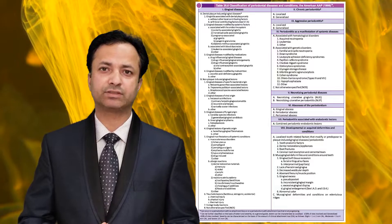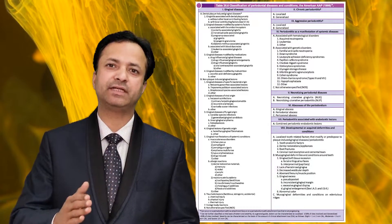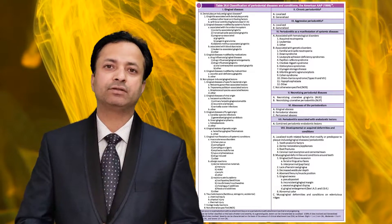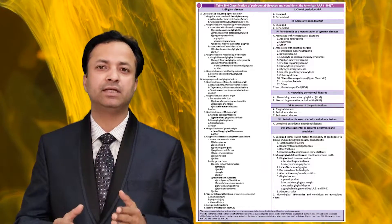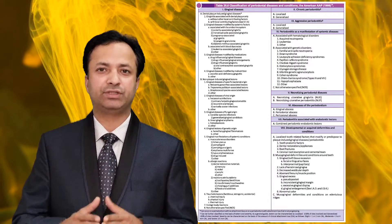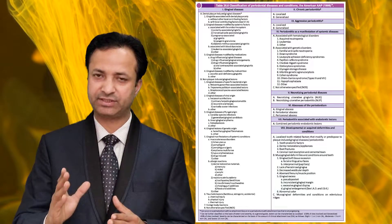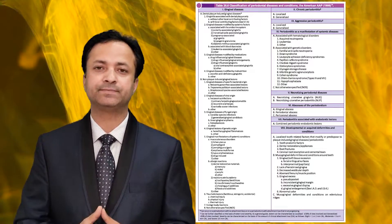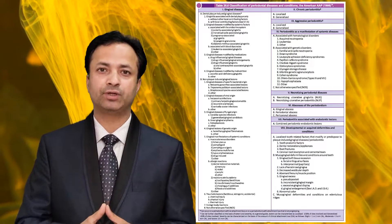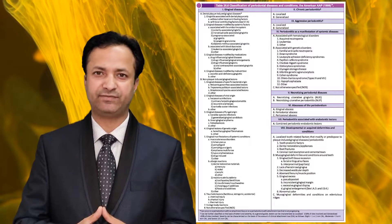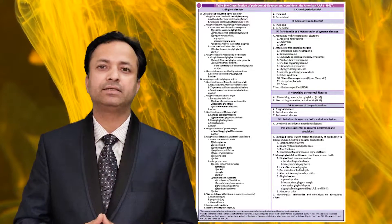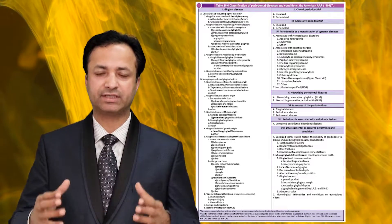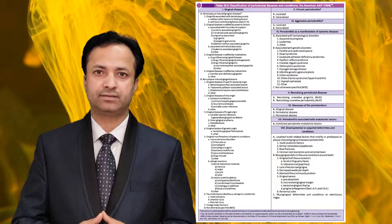Another important change was the replacement of necrotizing ulcerative periodontitis with necrotizing periodontal diseases. This was done because clinically it is very difficult to differentiate between necrotizing ulcerative gingivitis and necrotizing ulcerative periodontitis, so both conditions were grouped under a single terminology. Periodontal abscesses and periodontitis due to endodontic lesions were also introduced, as these were not considered in any previous classification systems. Developmental and acquired deformities were also included as they affect therapy outcomes and long-term maintenance.